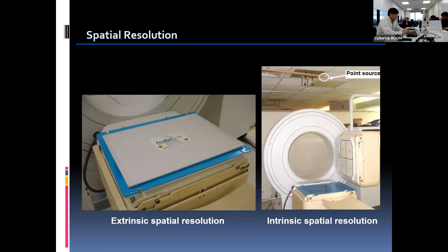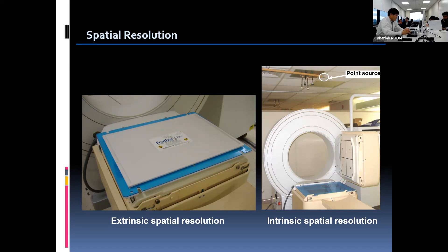The extrinsic resolution test is described in the left image. The four-quadrant bar phantom is placed right on the collimator mounted to the detector, and the cobalt sheet source covers on top of it. Resolution testing can also be done intrinsically without a collimator, using the technetium point source placed on the ceiling away from the detector, as described in the right image. In order to inspect over the entire detector with all different widths, the four-quadrant bar phantom is rotated 90 degrees, so different images are obtained for each detector.